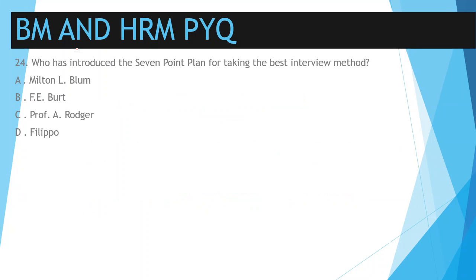Question number 24: who introduced the seven-point plan for taking the best interview? Options: A) Milton L. Bloom, B) F.E. Burt, C) Professor A. Rodger, D) Filippo. The seven-point plan was introduced by Professor Alec Rodger in the year 1952 from the National Institute of Industrial Psychology.